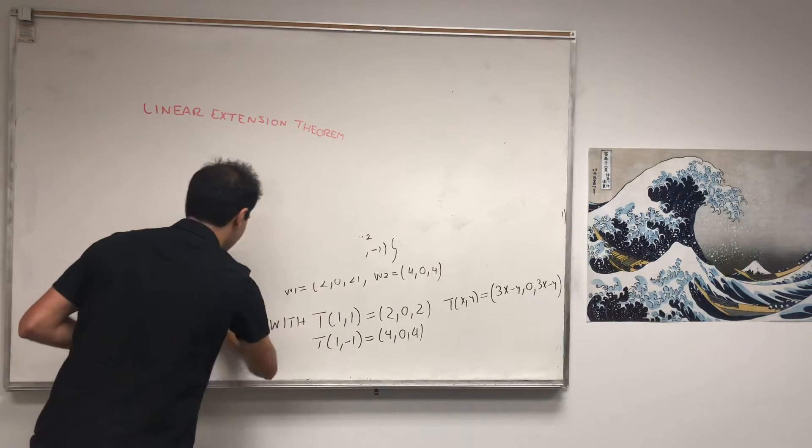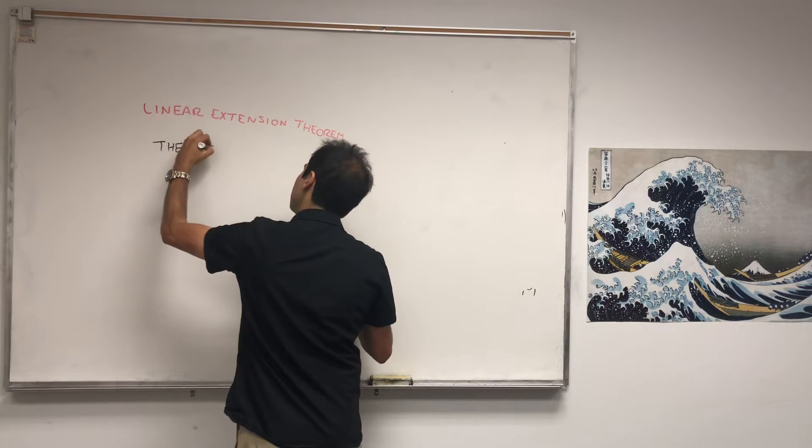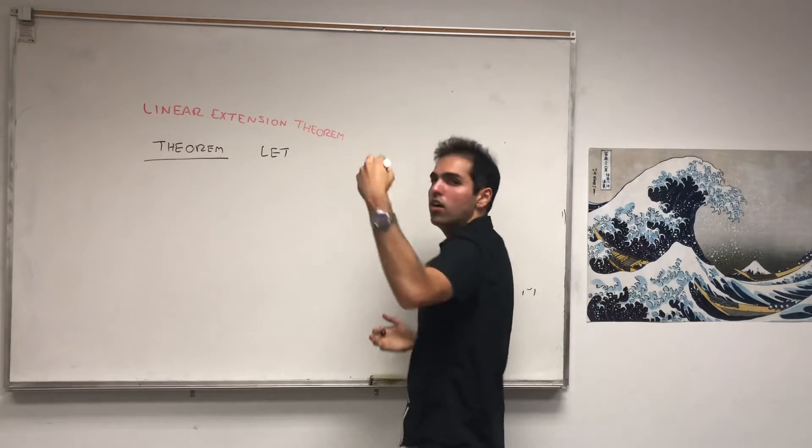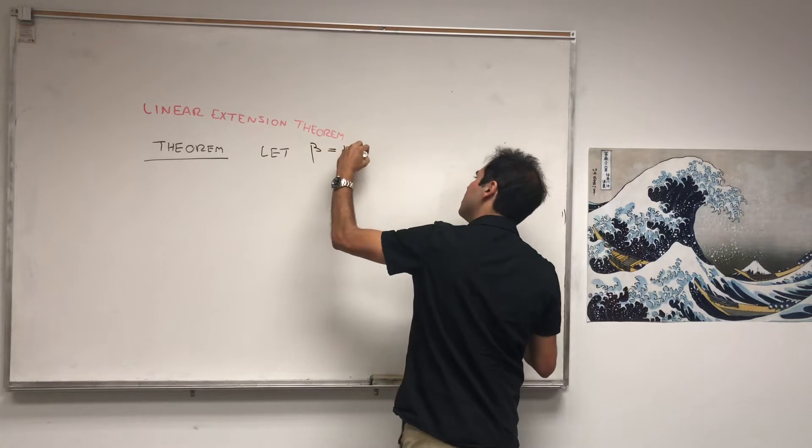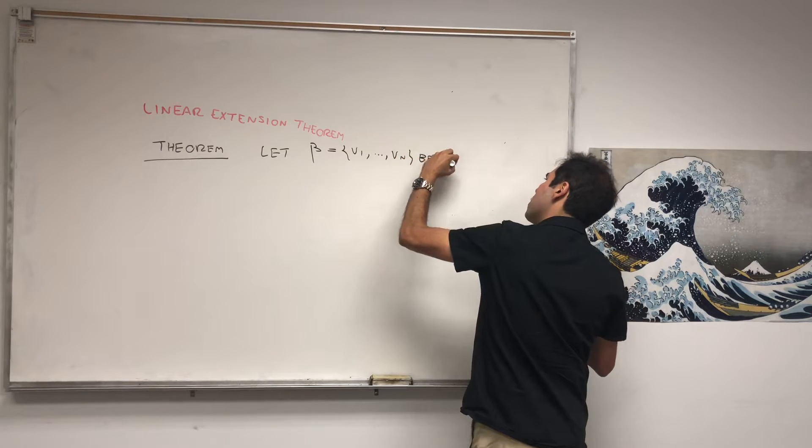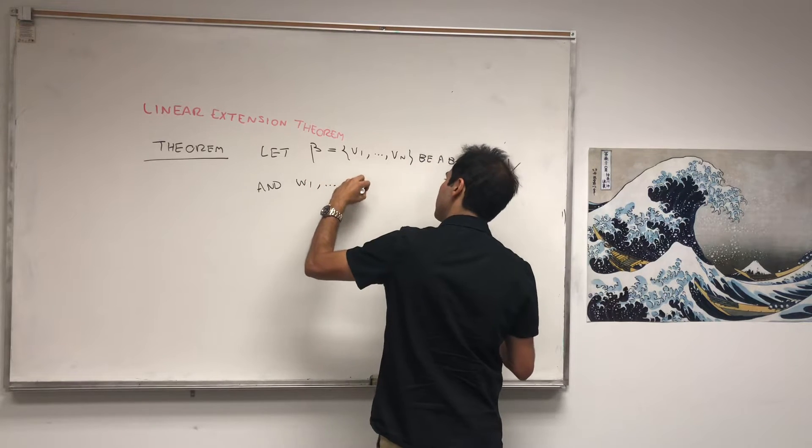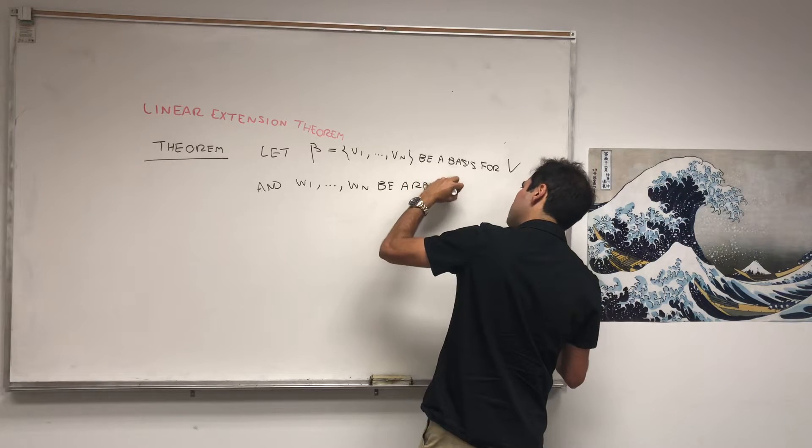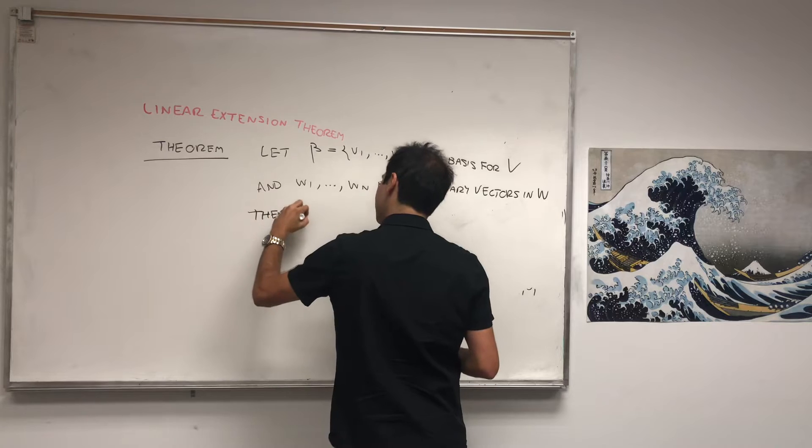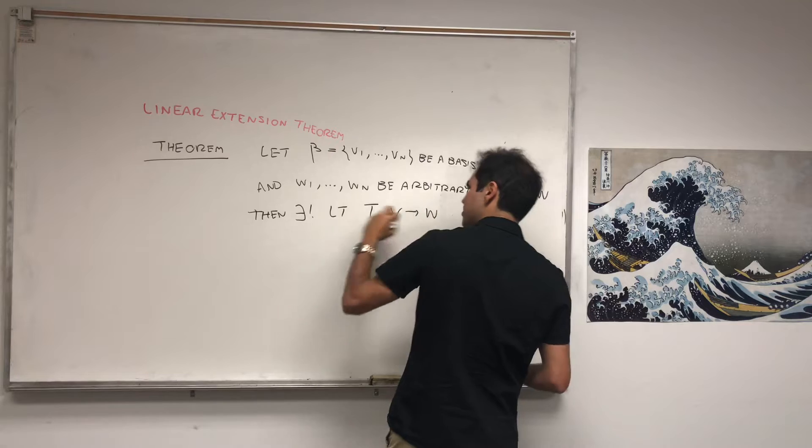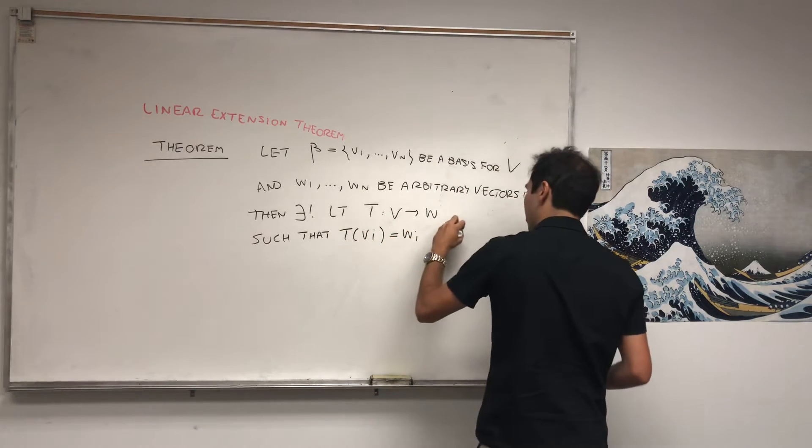So it's really because of the following theorem that matrices exist. So let me now state it. State and prove it. So theorem. Let V and W be finite dimensional vector spaces, or at least V be finite dimensional. So let beta, which is V1 up to Vn, be a basis for V, and W1 up to Wn, be arbitrary vectors in W. Then there exists a unique linear transformation T from V to W, such that T of Vi equals to Wi for all i from 1 to n.